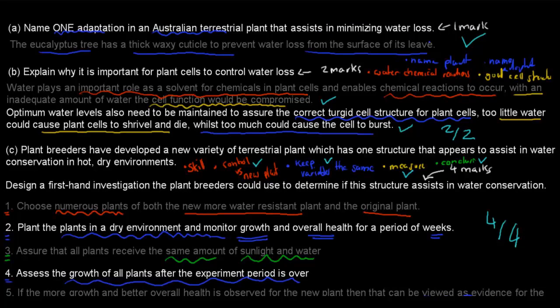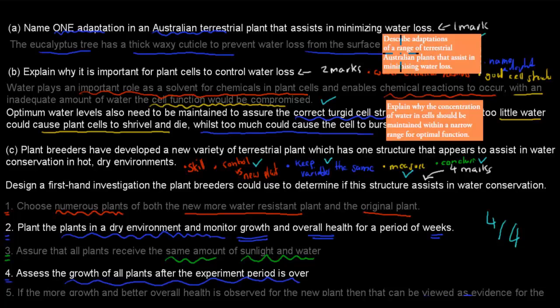And where do these dot points come from? The first one comes from describing adaptations of a range of terrestrial Australian plants that assist in minimizing water loss. So we mentioned earlier that the Australian one we mentioned was a eucalyptus tree and their adaptation was a thick waxy cuticle. So this question A comes directly from this dot point. Question B, so explain why it's important for plant cells to control water loss, comes from this dot point: explain why the concentration of water in cells should be maintained within a narrow limit for optimal function. So that's basically question B. So even though it's saying about plant cells, but remember both plants and animal cells have the same requirements, which is to keep that constant internal environment when it comes to water and other things. And C, again this was not a dot point, C was just a skill that they're testing. They can also test skills in their testing if you can design a proper experiment.